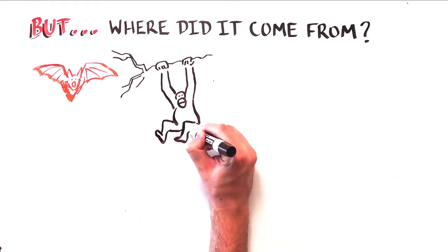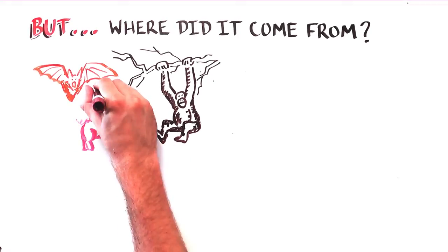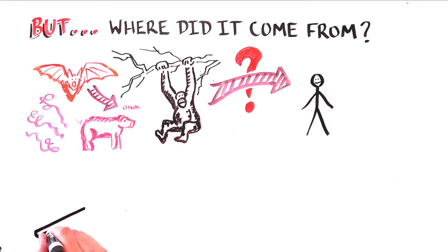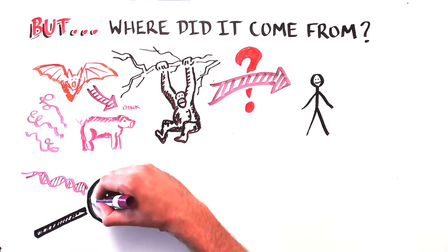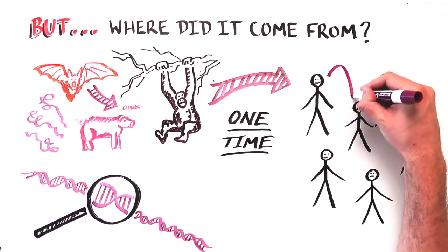It may have crossed to humans through eating an infected bat, pig, or non-human primate such as monkeys. Using genetic information, scientists have shown that there was only a single instance of animal-to-human transmission of the virus.